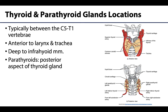The thyroid gland is a large butterfly-shaped gland with two lobes and a middle isthmus. It is typically located between around C5 and T1 vertebrae. As you can see in this image, it is anterior to the larynx as well as the trachea, and deep to the infrahyoid muscles. The parathyroid glands are typically located on the posterior thyroid gland — you can see these small parathyroid glands on the posterior part of the thyroid gland. Sometimes it looks like it's part of the thyroid gland, but they are functionally different.